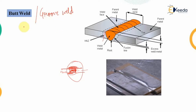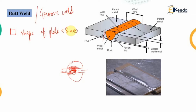Groove welds are provided in a square shape if the plate being connected has a size less than 8mm. For any size greater than 8mm, we usually provide either a V-type, X-type, or U-type connection.